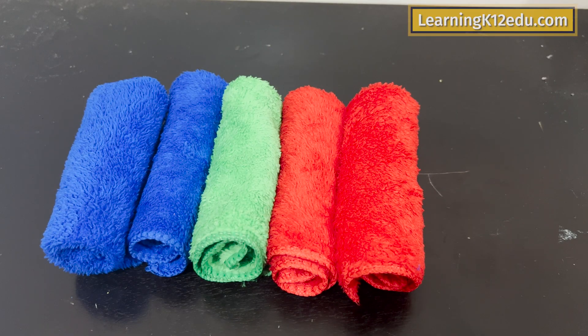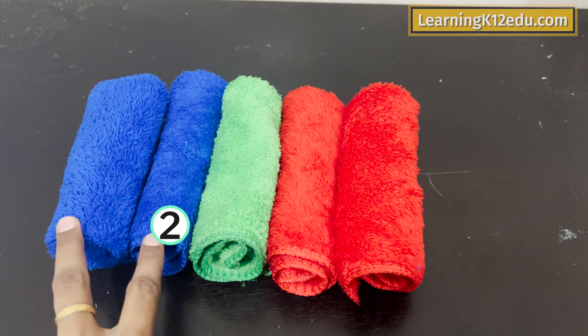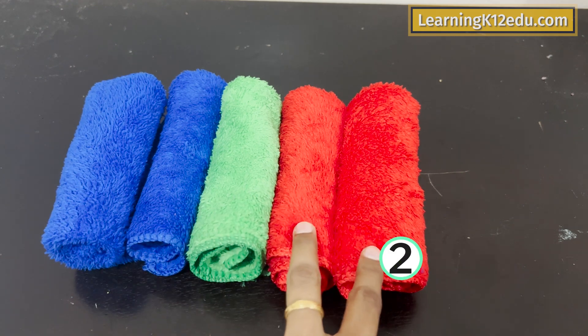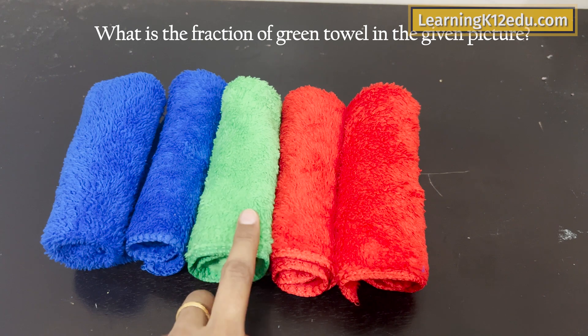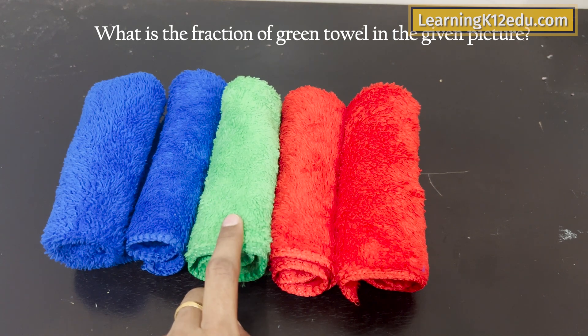Let's take just one more example. Now I have five hand towels of mixed colors. Two are blue, one is green and two are red. Tell me what is the fraction of green colored towel in this situation?